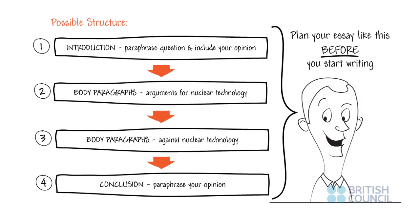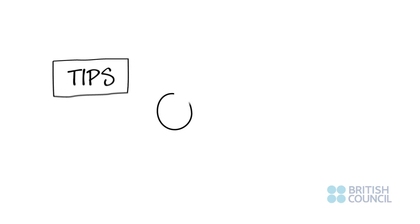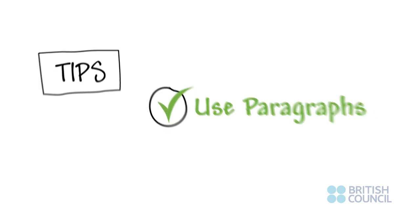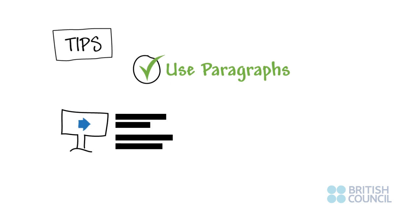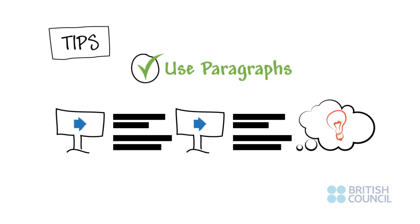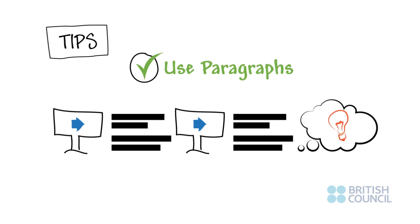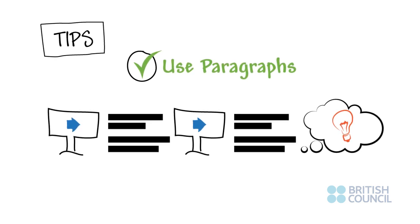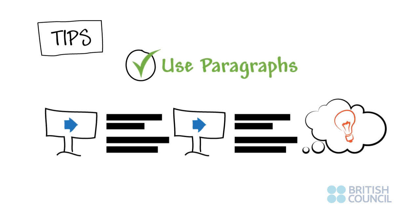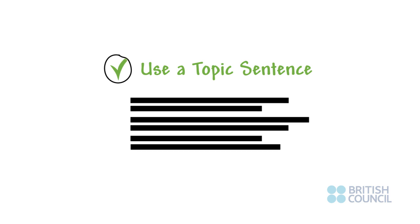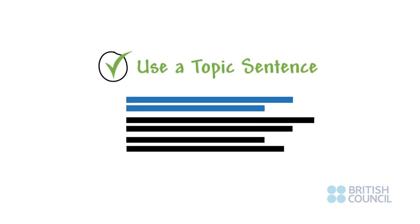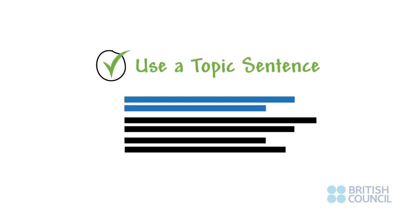Plan your essay like this before you start writing. It's important to use paragraphs — these give structure to a piece of writing. Think of paragraphs as a signpost telling whoever reads your work where your ideas are going and when you are moving on to a different point. Since paragraphs are used to explain your argument in stages, express one idea or set of ideas in each paragraph. A good way to start a paragraph is with a short, simple sentence that introduces the main idea of the paragraph. Teachers often call this a topic sentence.